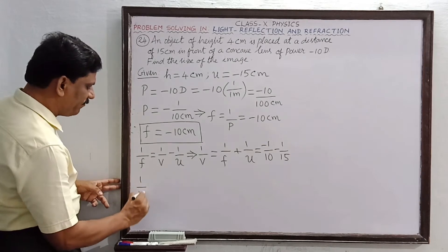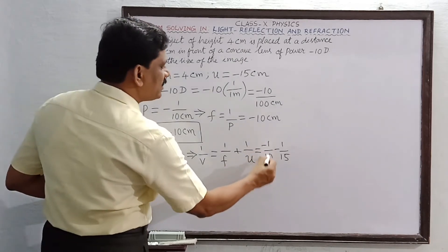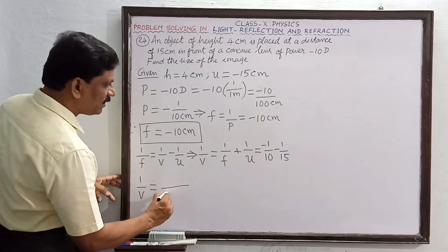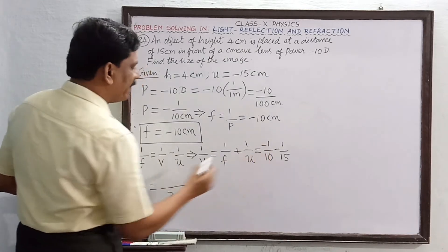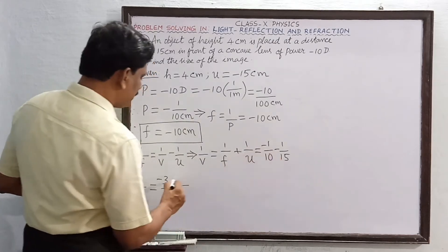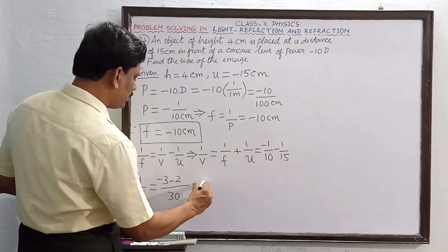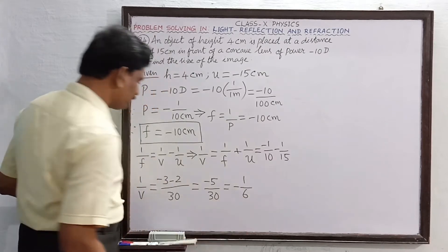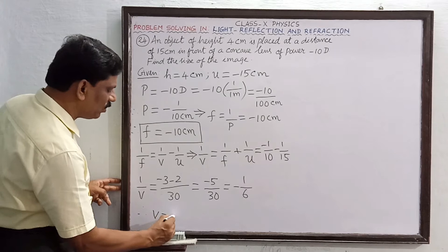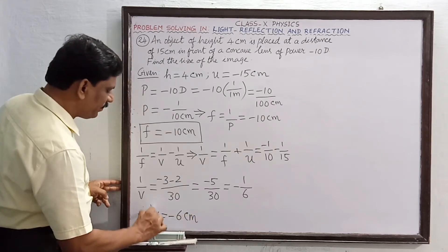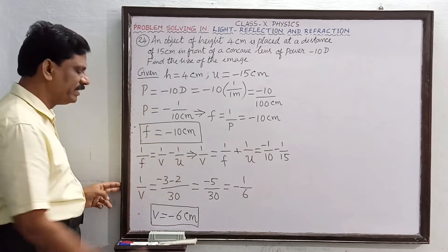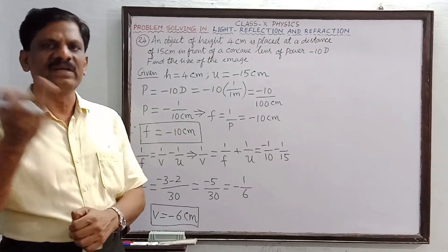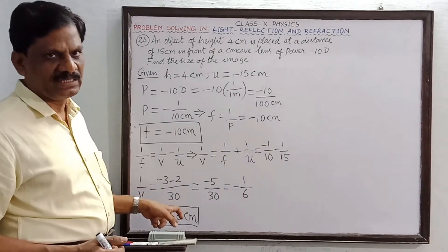Taking LCM as 30: 1 by v equals minus 3 by 30 minus 2 by 30, which equals minus 5 divided by 30, equal to minus 1 by 6. Therefore image distance v equals minus 6 centimeter. The negative sign means the image is formed in front of the concave lens, at a distance of 6 centimeters.